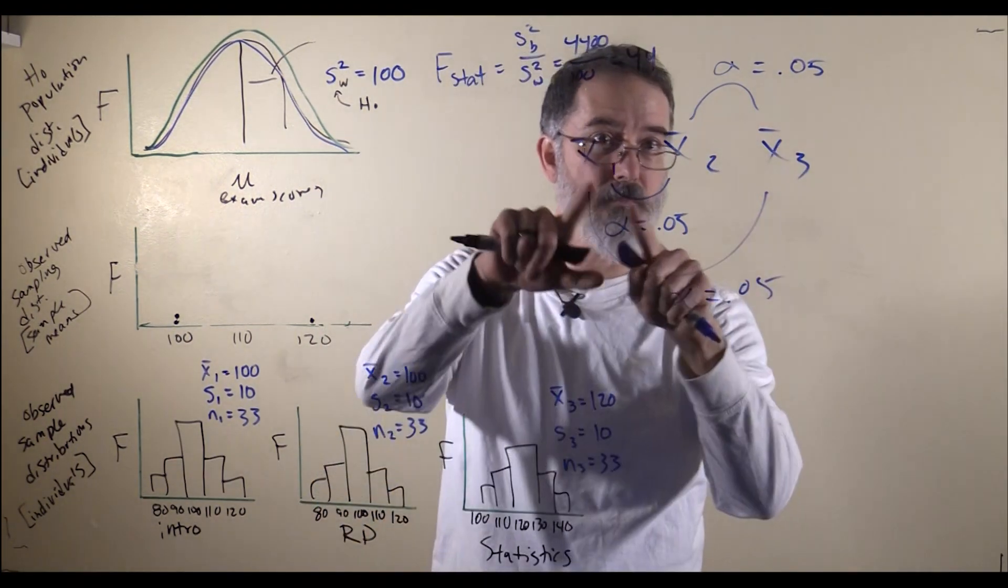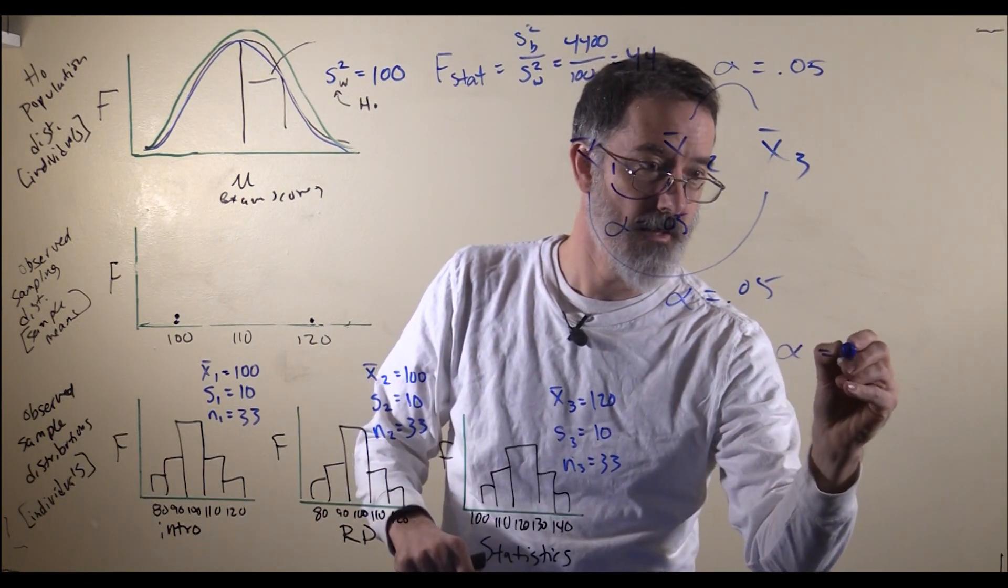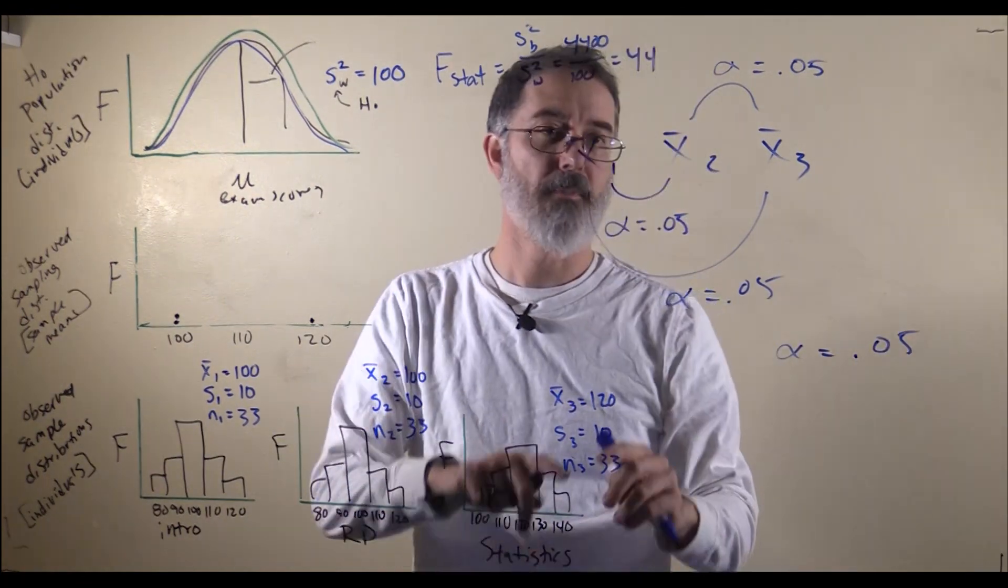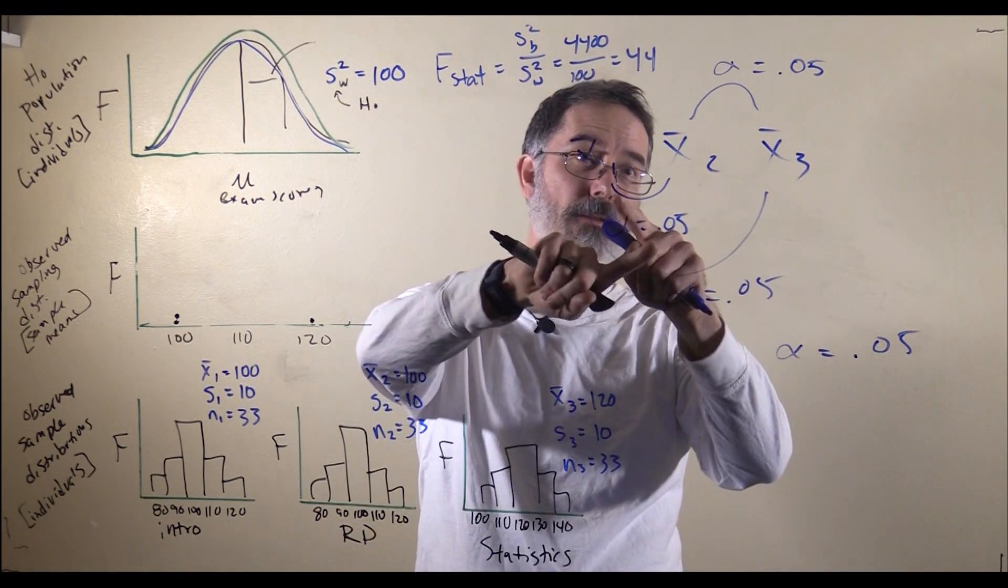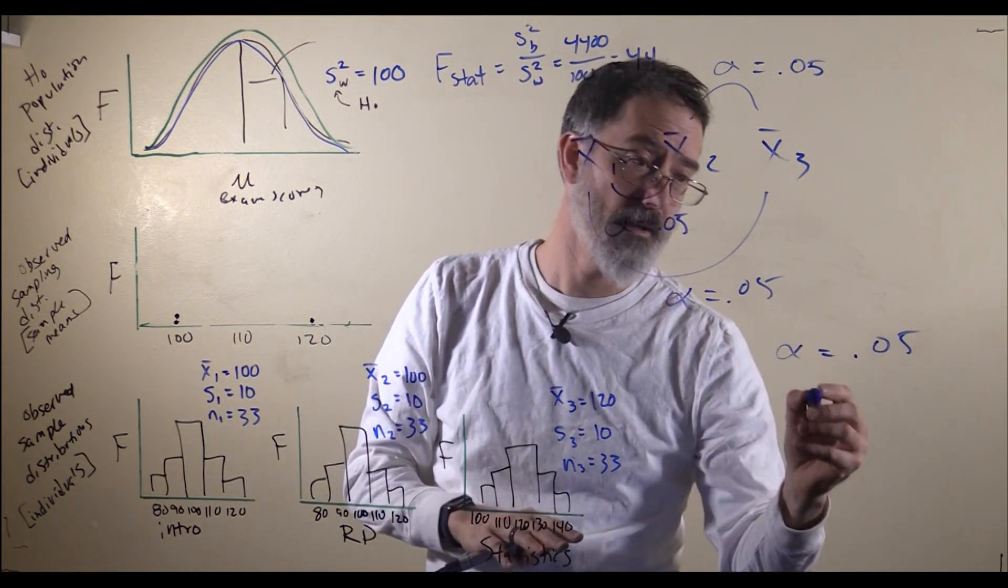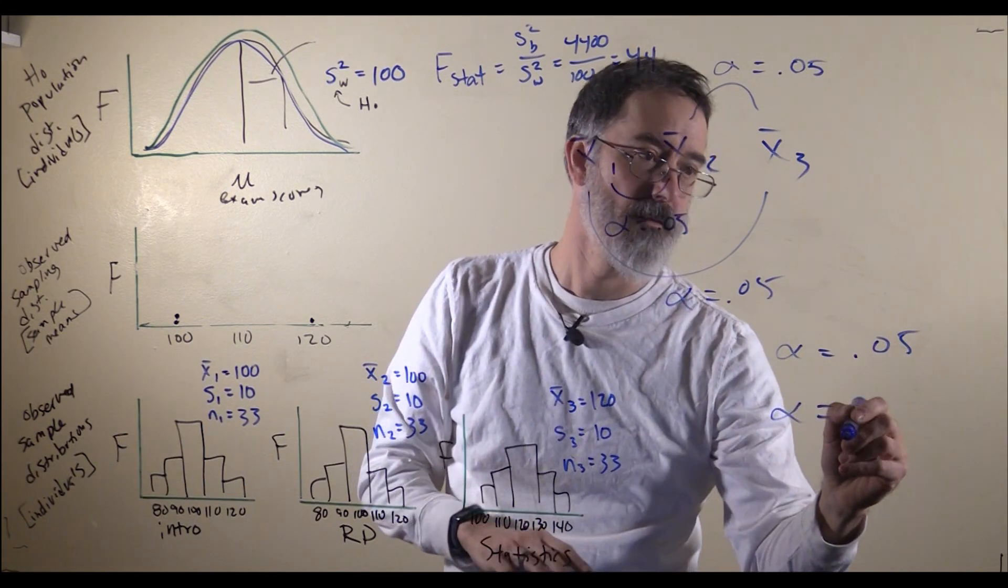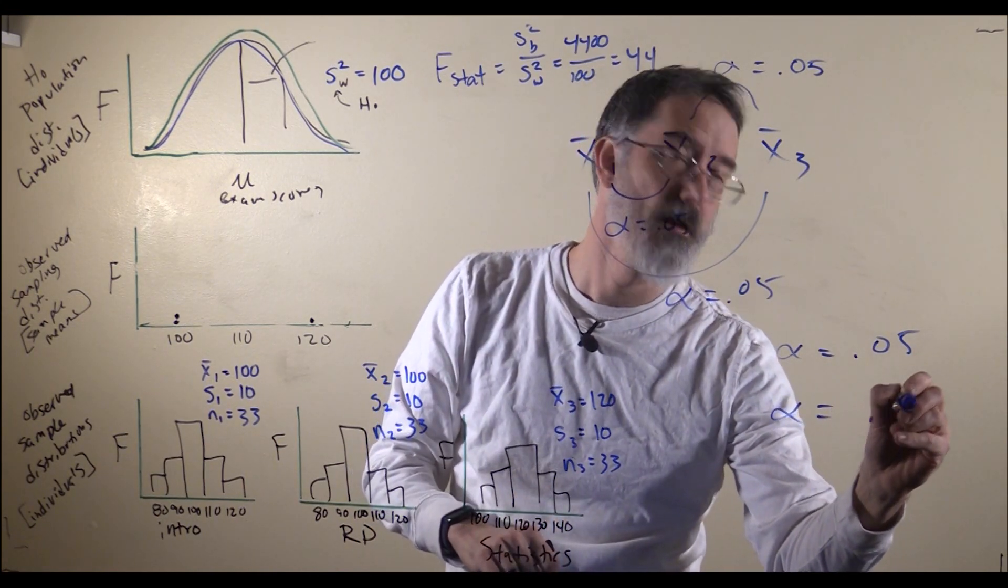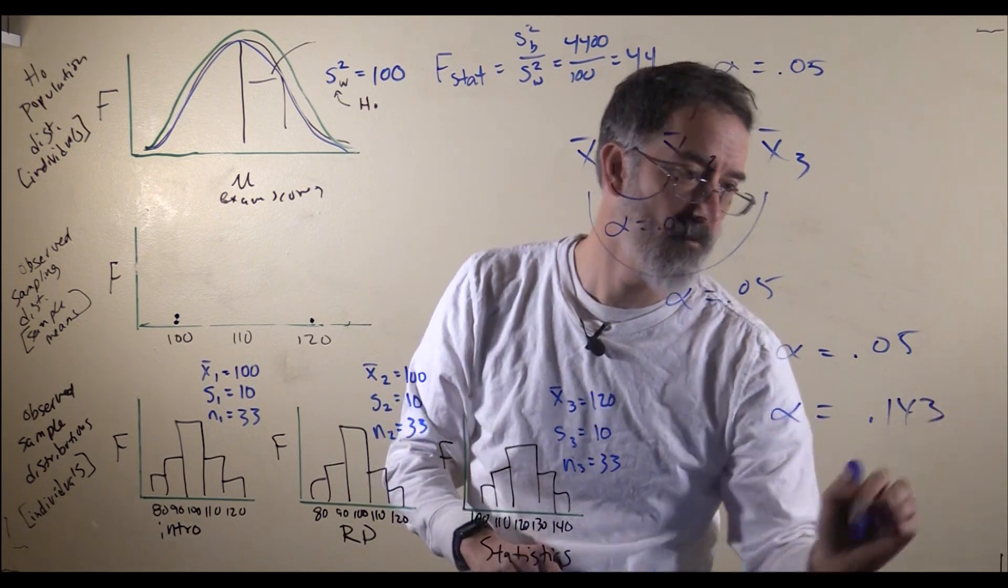If you do just one test, alpha is .05. But if you have three means and you have to do three comparisons, then the probability of a type 1 error with those three different means, the alpha, turns into .143.